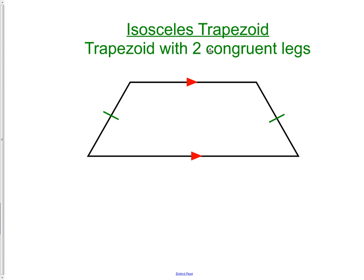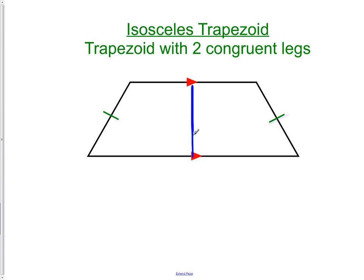Next we have the isosceles trapezoid. An isosceles trapezoid is simply a trapezoid with two congruent legs. We still have the parallel sides — the top side and the bottom side are parallel. We know nothing about their lengths, but we do know that the left leg and the right leg are congruent. That's what makes it an isosceles trapezoid. We have one pair of parallel sides across from each other and one pair of congruent legs across from each other.